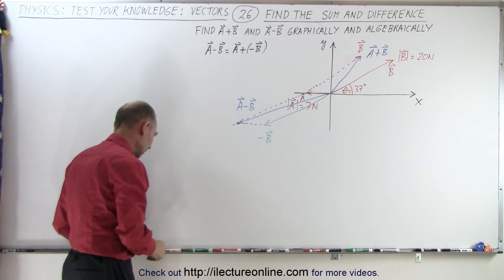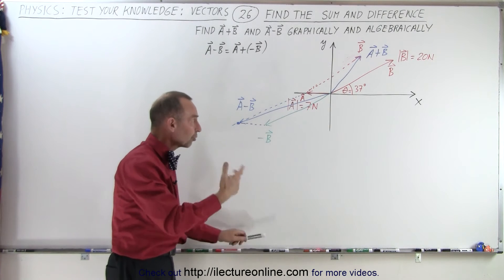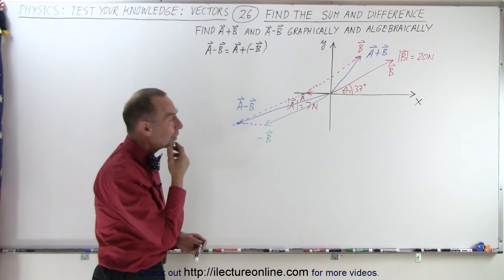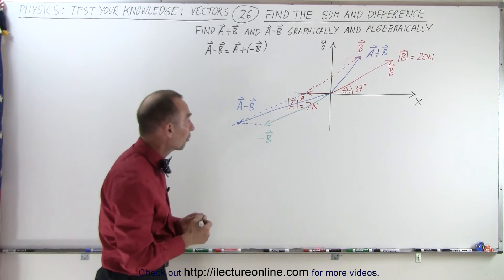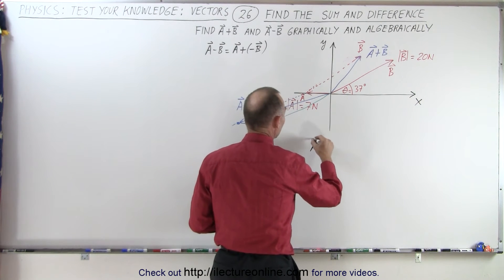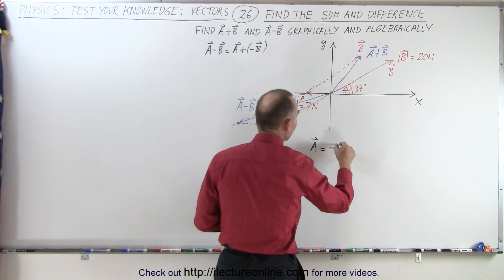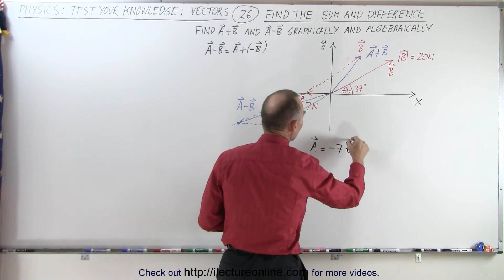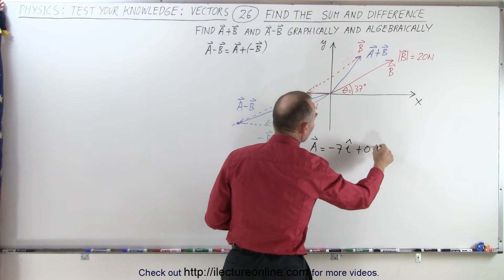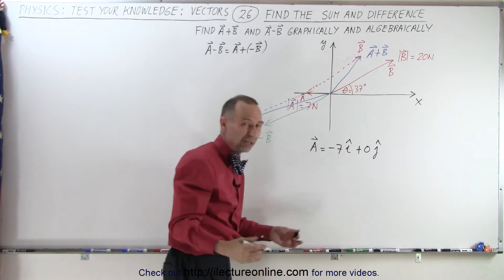Now let's do the same analytically. In order to do that algebraically, what we need to do here is we need to find the X and Y components of each of the two vectors. So for vector A, that's fairly straightforward because it only has an X component. It would be minus 7 in the I direction plus 0 in the J direction.